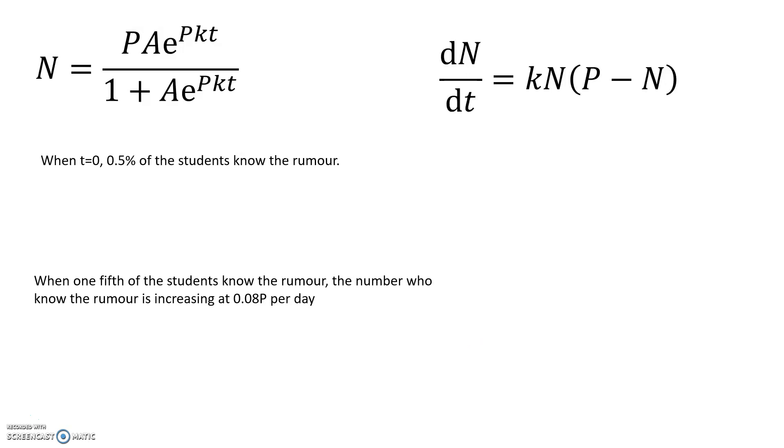I've put where we got to on this slide. This equation is my solution, but it still has two unknowns: A and K. P is not an unknown - P is the school population, so that's a constant. And this was where we started, the differential equation telling me the rate of change. We need to turn the two facts that we've got into mathematical conditions.